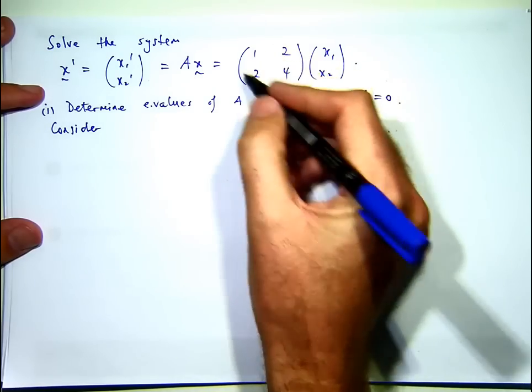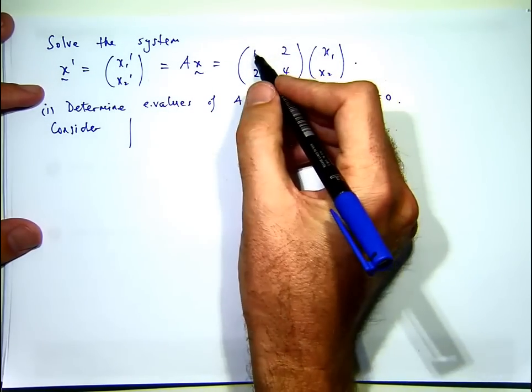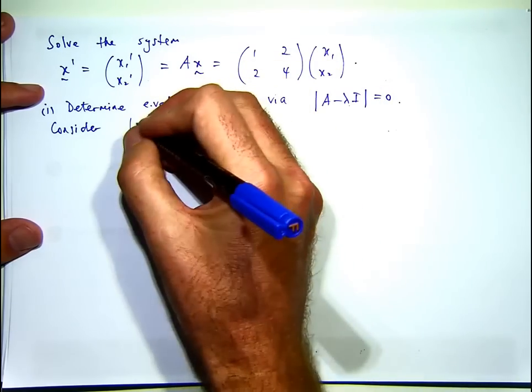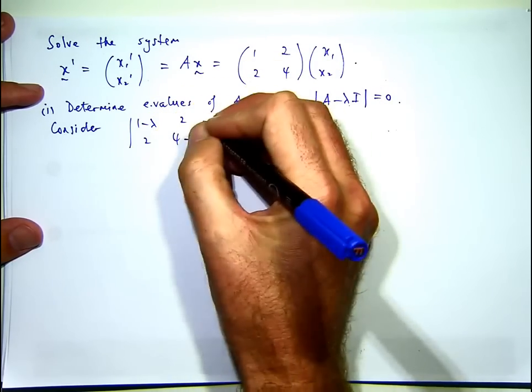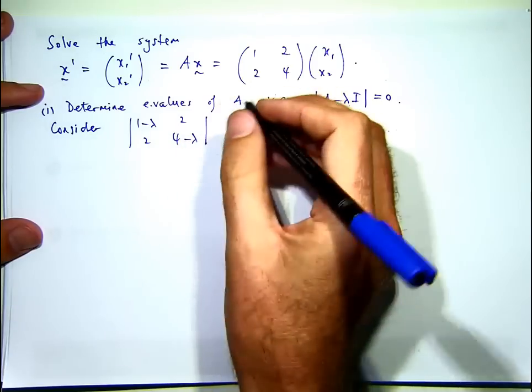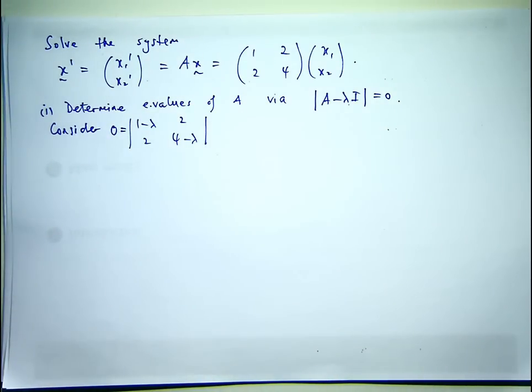We're looking for the values of lambda such that this determinant is zero. So if that's my matrix A, A minus lambda I is just going to be 1 minus lambda, 4 minus lambda down the diagonals. I want to set that equal to zero and find the values of lambda.